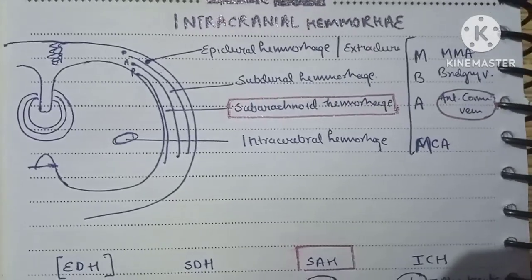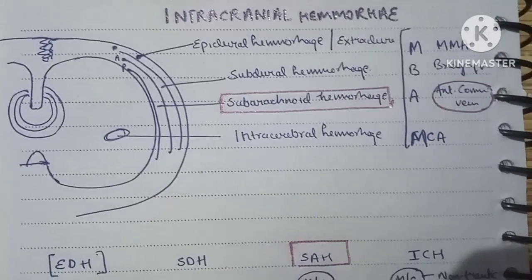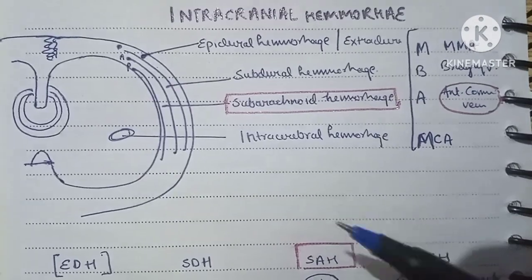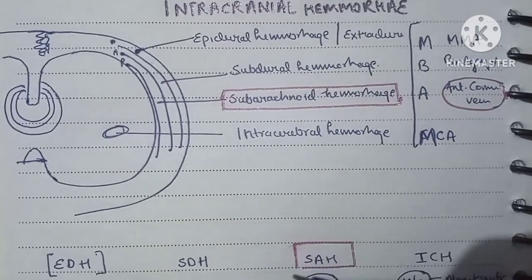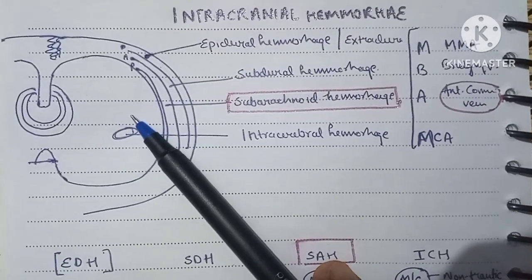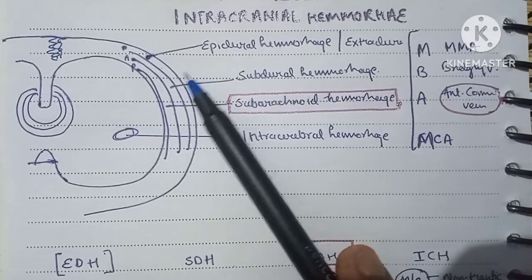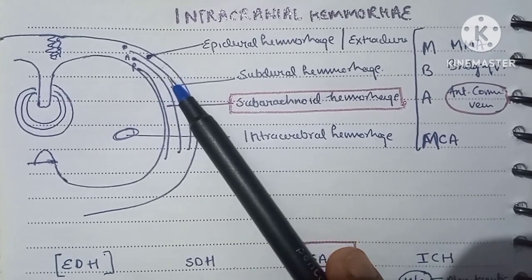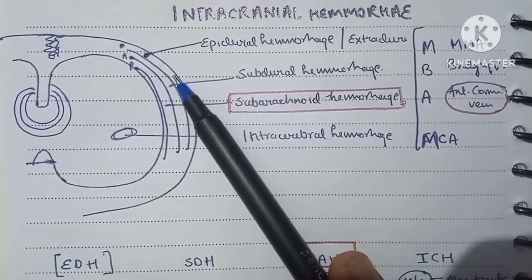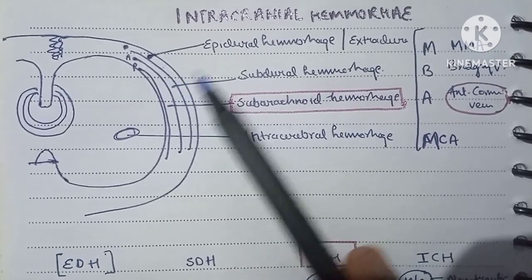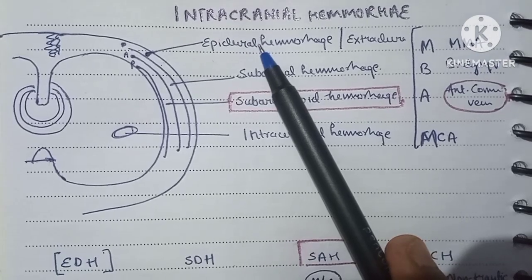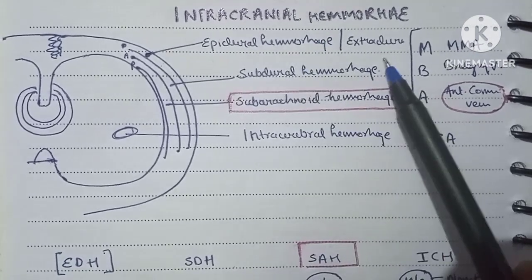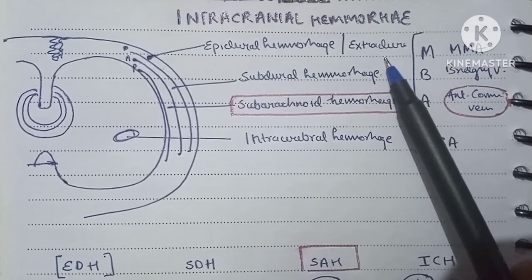This video is about intracranial hemorrhages — we have four of them. We will start by understanding the layers surrounding the cerebral cortex. From outside in, we have dura, arachnoid, and pia. The space between the dura and the endosteal layer of the skull is the epidural space, and here occurs the epidural hemorrhage, also known as the extradural hemorrhage.